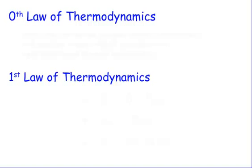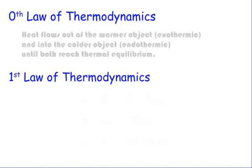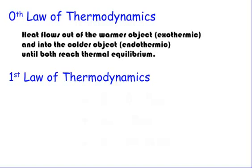The zeroth law of thermodynamics says that heat flows out of the warmer object — that's called exothermic, heat being released or removed — and into the colder object — that would be endothermic, or absorbing heat — until they both reach thermal equilibrium. Every time you do anything that involves heat getting transferred from a warmer object to a colder object, that's the zeroth law of thermodynamics.